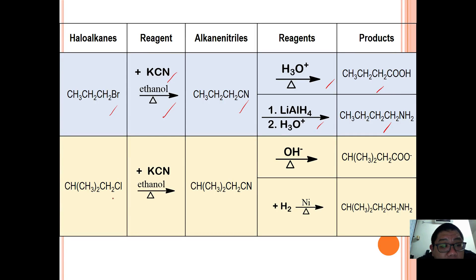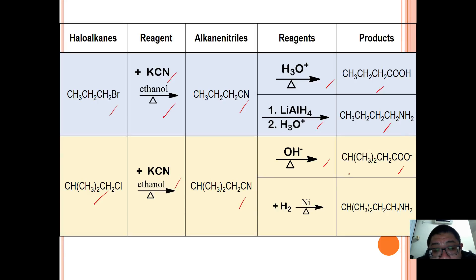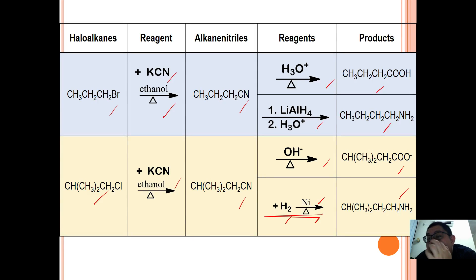Another example: 2-methyl-1-chloro-2-methylpropane reacted with potassium cyanide in ethanol under reflux forms 2-methylbutanenitrile. Alkaline hydrolysis forms the carboxylate ion, and reaction with hydrogen and nickel under heating forms an amine. These are generally the reactions involving nitrile synthesis from haloalkanes.